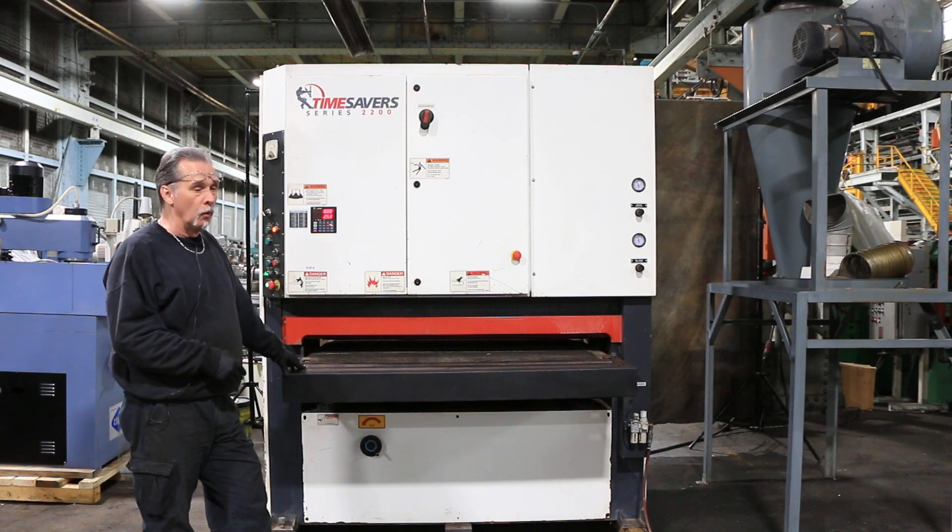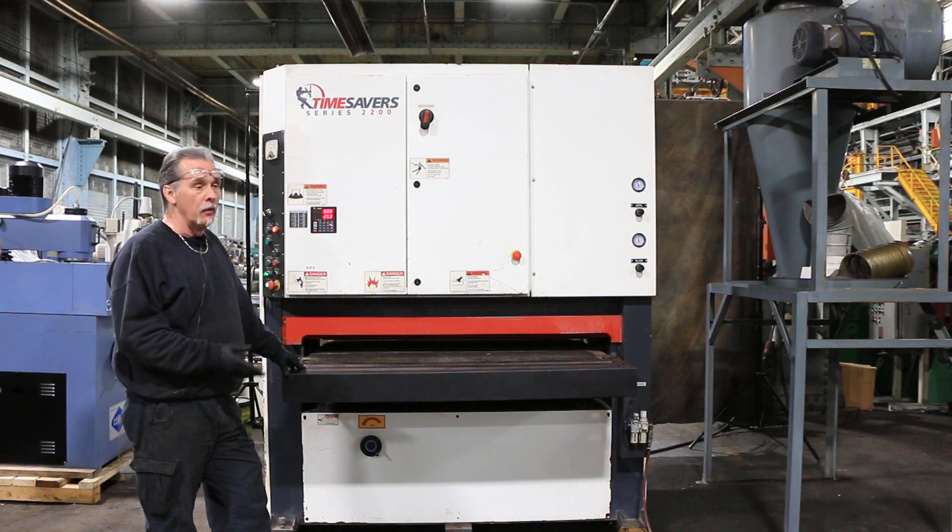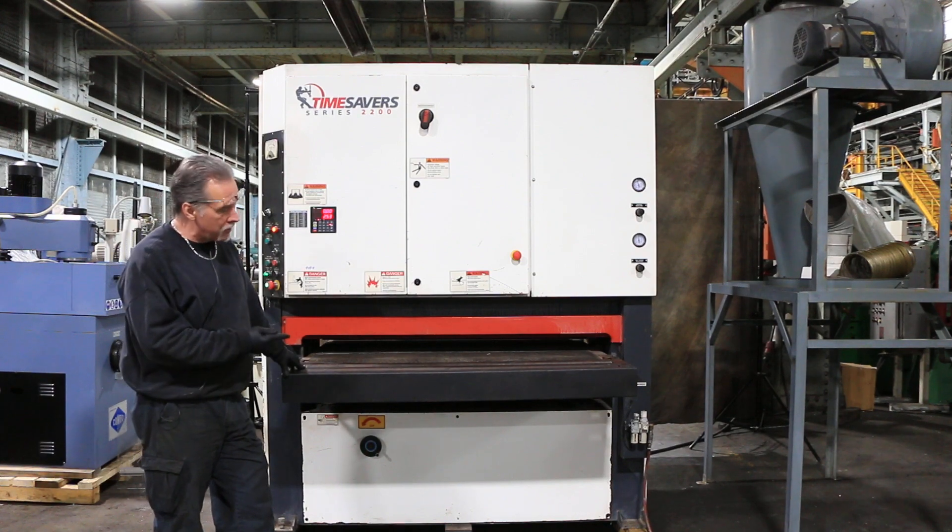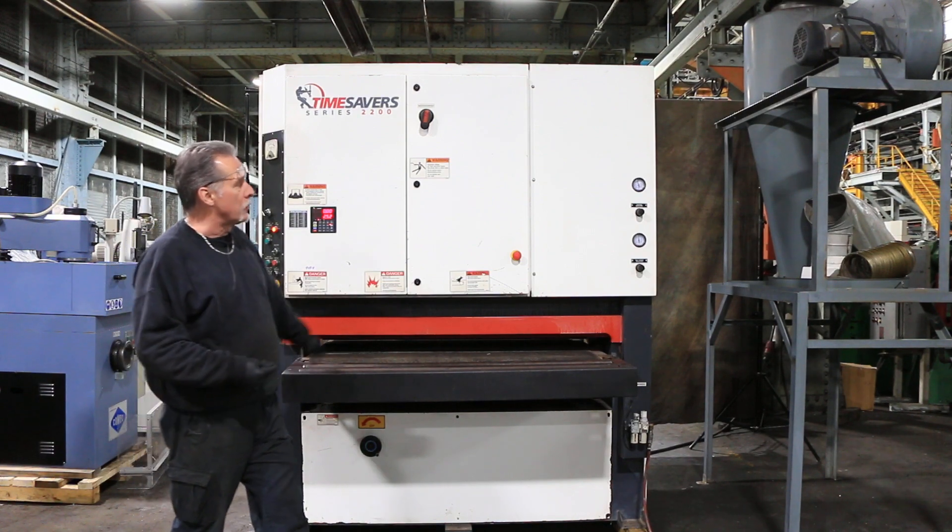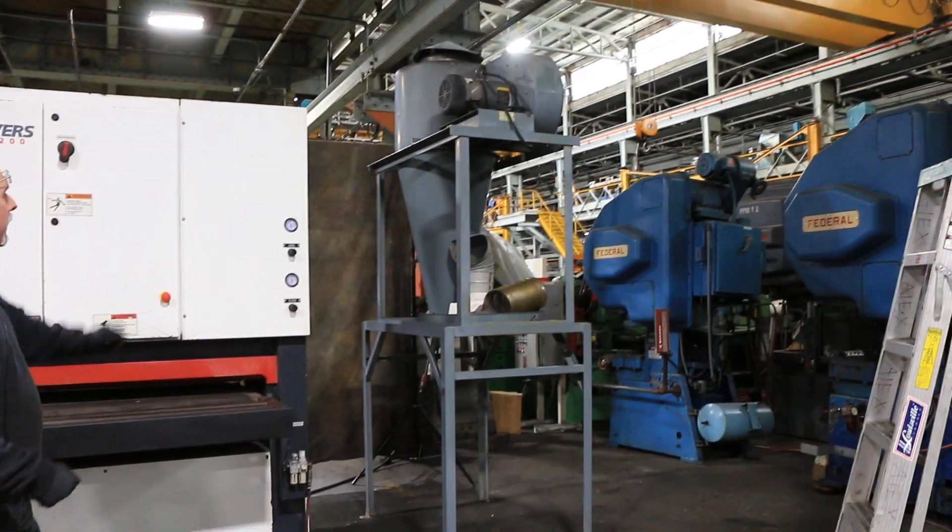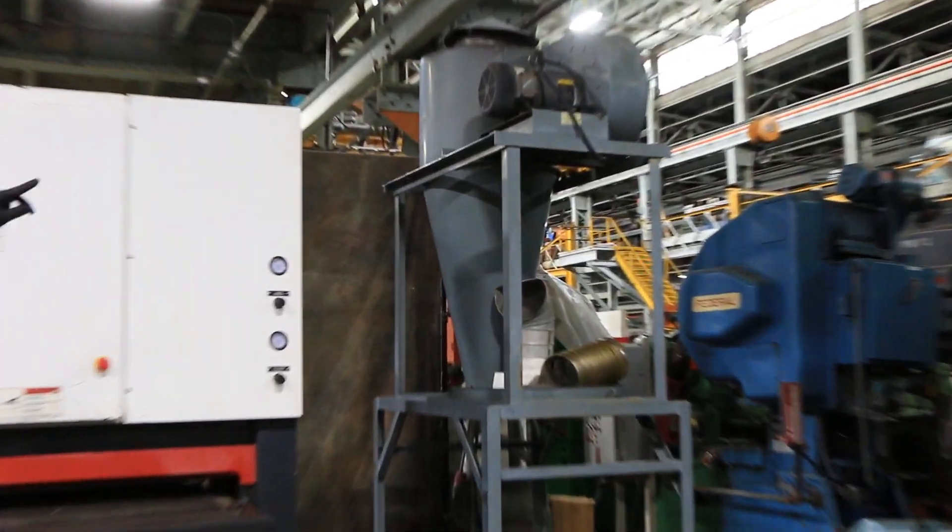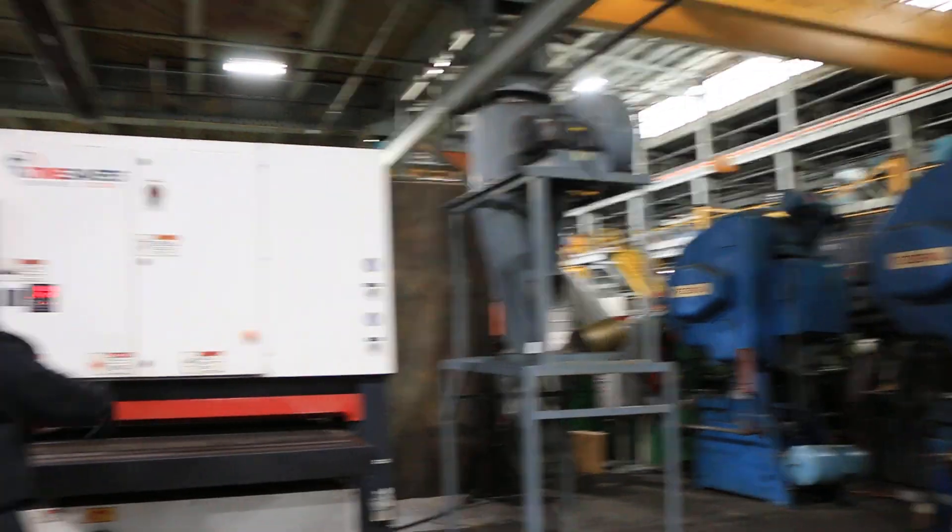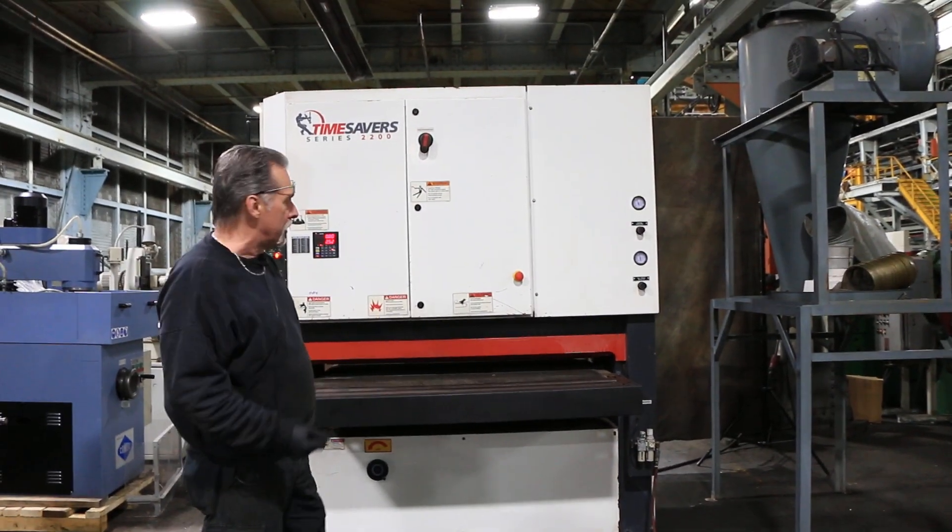This machine is currently wired for 440 volts, so it requires 440 plus compressed air to run. It also comes with a Dust Cop brand vacuum system. It gets hooked to the top of the machine to suck up all the grinding particulate that you'll generate using this machine.